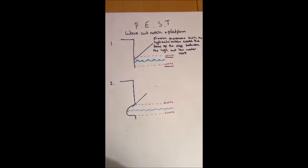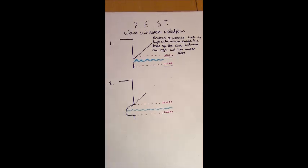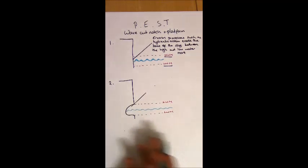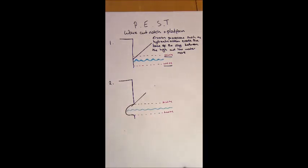Over time, the continued processes of hydraulic action, corrosion, and abrasion are going to lead to severe levels of erosion between the high and low water mark. There won't be any erosion above the high water mark, apart from occasionally during large storm events. That continued erosion is going to create a dent or notch in the cliff between the high and low water mark — and that's what we refer to as the wave cut notch.